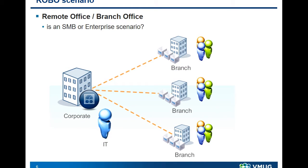What is ROBO? ROBO is a Remote Office / Branch Office — mostly something small at the local level, because on a branch you may have a really small part of the company. You cannot use a generic SMB solution for this scenario because at the global level it is an enterprise solution, and it probably needs enterprise-level services and availability. You have to think big, because it's not just a collection of small offices — you have to manage them, and there are several different aspects to consider.